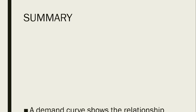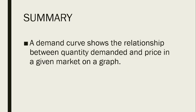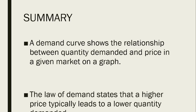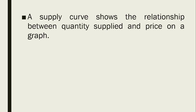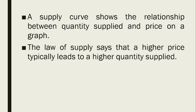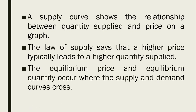For the summary of our lesson: A demand curve shows the relationship between quantity demanded and price in a given market on a graph. The law of demand states that a higher price typically leads to a lower quantity demanded. A supply curve shows the relationship between quantity supplied and price on a graph. The law of supply says that a higher price typically leads to a higher quantity supplied.